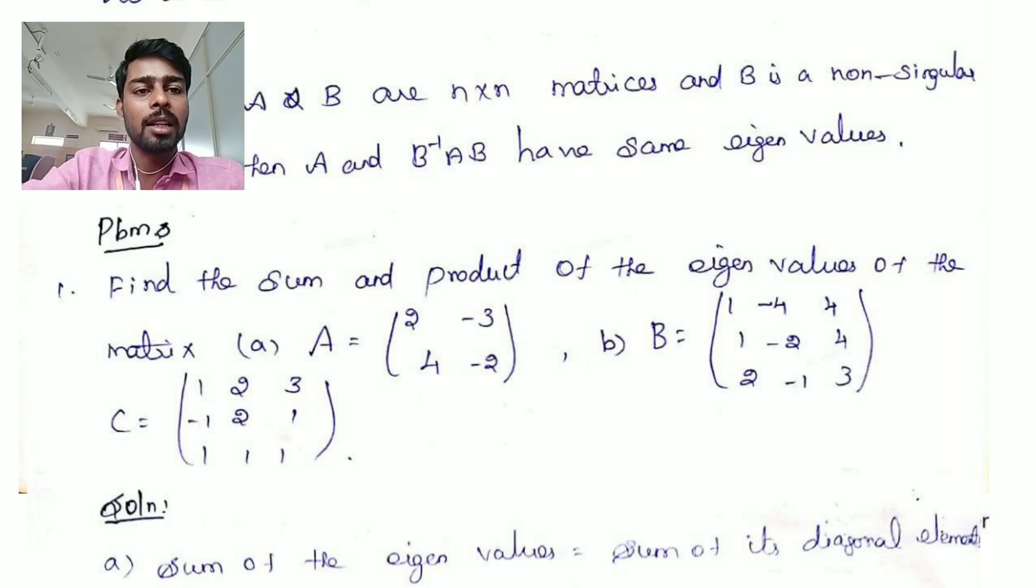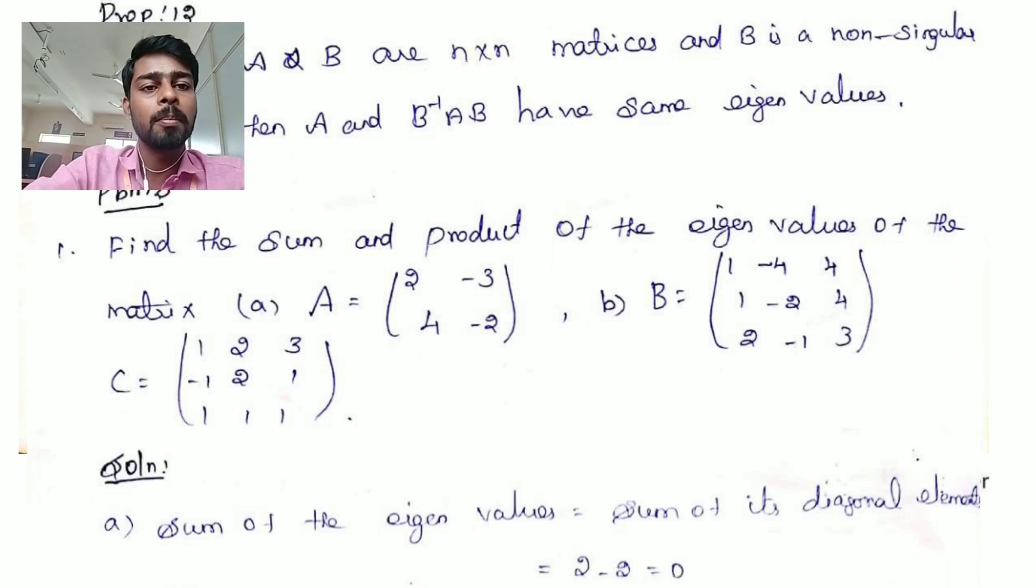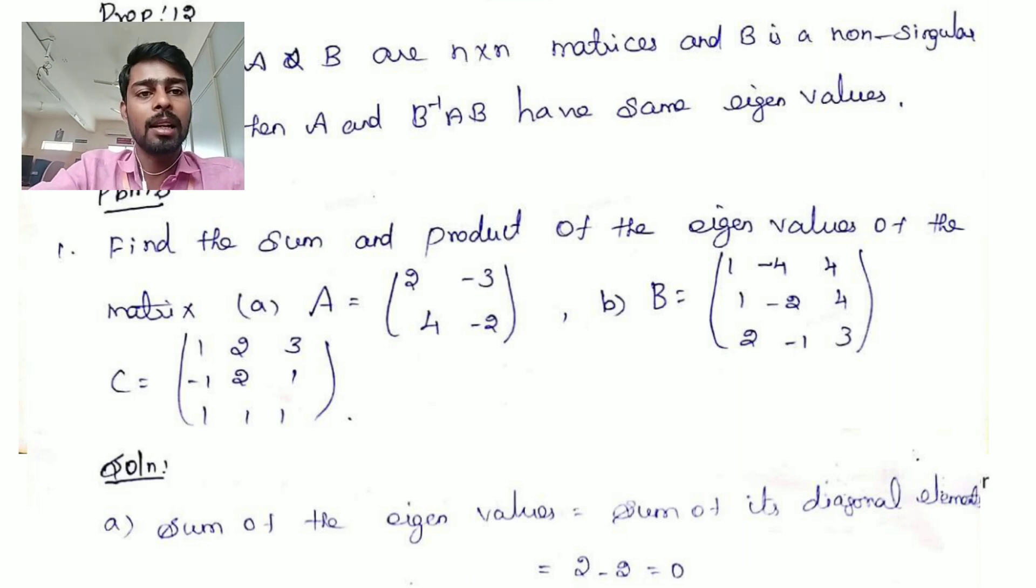First matrix, 2 by 2 matrix, 2 minus 3, 4 minus 2. What is sum? Sum is trace. What is trace? Sum of the main diagonal element.